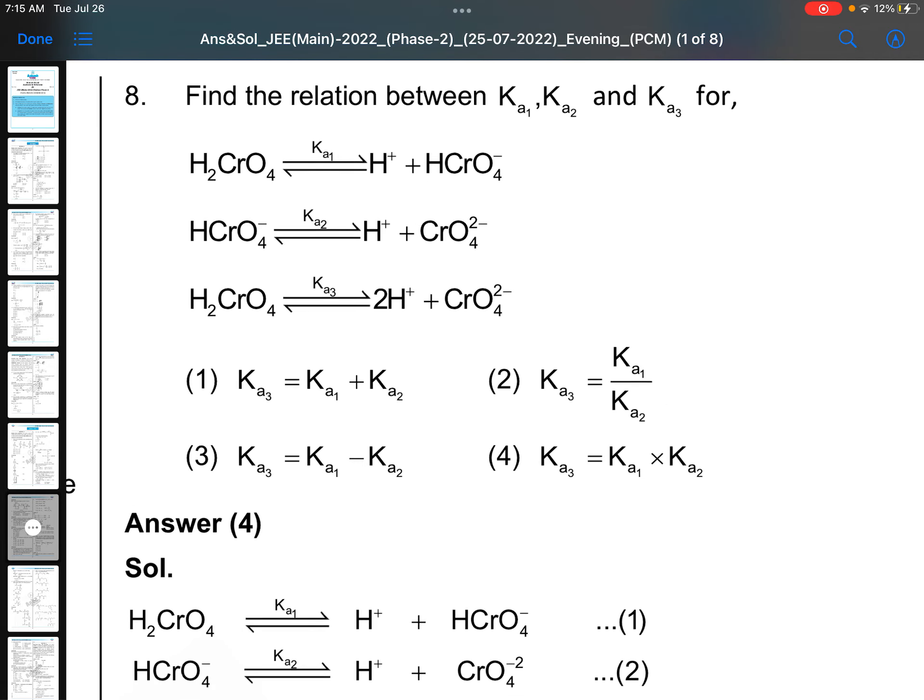This is simple. Find the relation between Ka1, Ka2, Ka3. First, one proton gone. Second, another proton gone. In the overall reaction, two protons gone. So Ka3 is equals to Ka1 into Ka2.